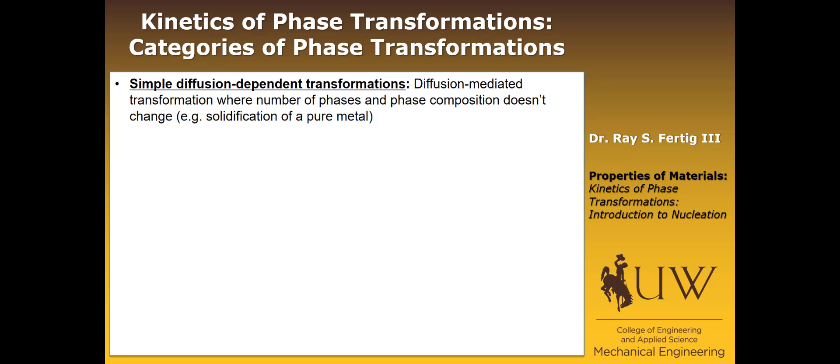There are basically three categories of phase transformations that we want to consider. The first is just a simple diffusion-dependent transformation. An example of this would be solidification — if you have a molten metal and you're turning it into a solid, that would be an example of a simple diffusion-dependent transformation.